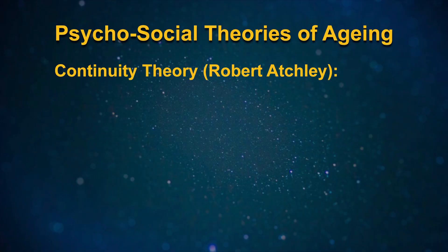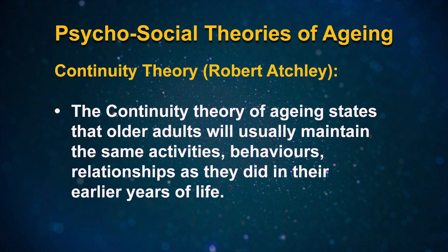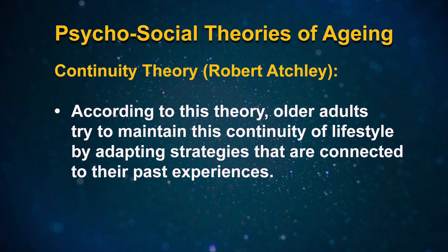Continuity theory, given by Robert Atchley, states that older adults will usually maintain the same activities, behaviors, and relationships as they did in their earlier years of life. According to this theory, older adults try to maintain continuity of lifestyle by adopting strategies connected to their past experiences. The continuity theory modifies and elaborates activity and disengagement theories.